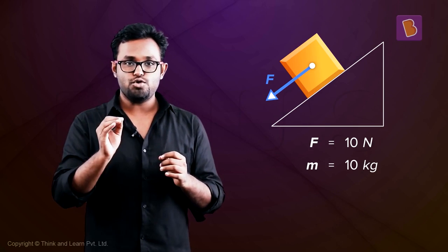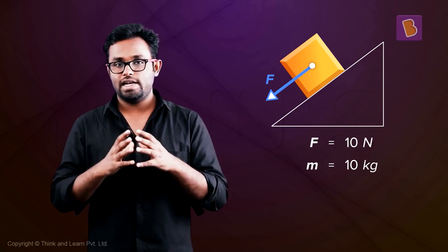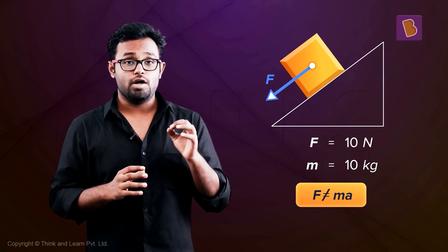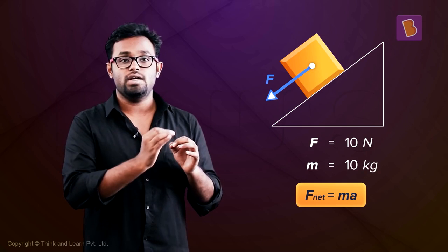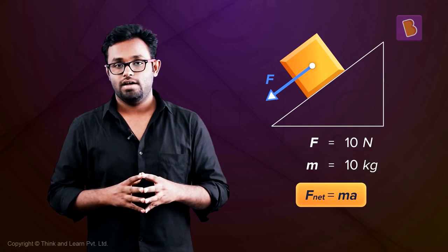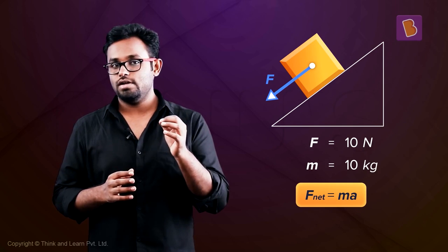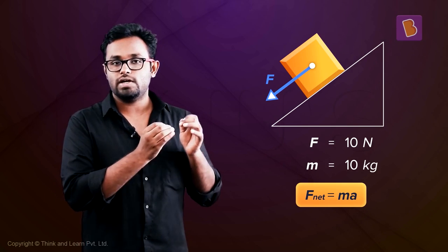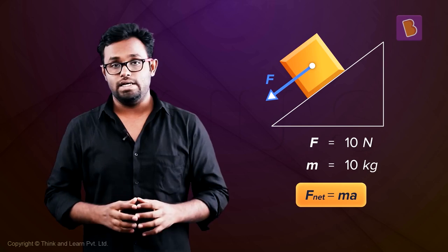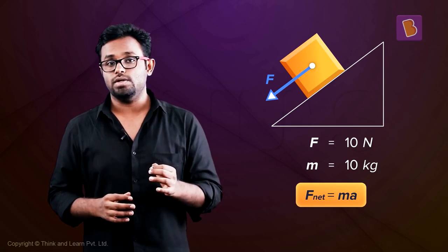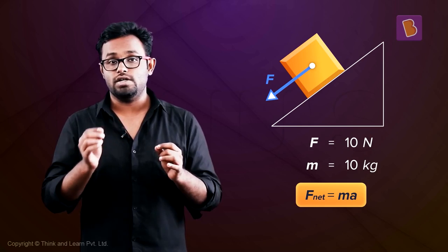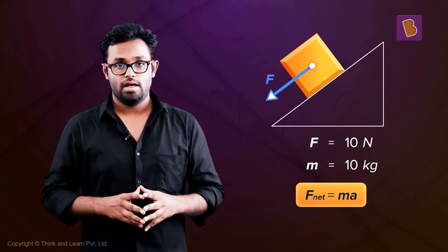Now I know I have confused you to the maximum level, so I'll clarify it. F is not equal to MA because F net is equal to MA. I know this sounds a little silly, but students tend to make this mistake all the time. We must realize that the net force on an object is equal to its mass times acceleration — the net force. Now the question is, how will you find the net force?